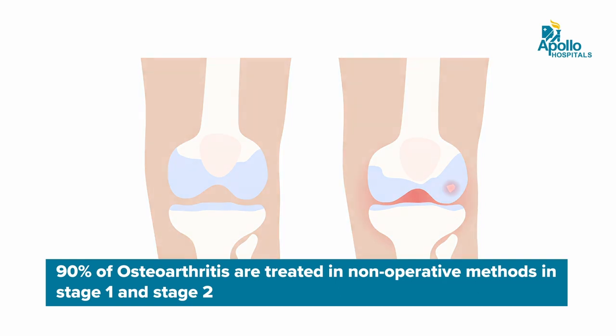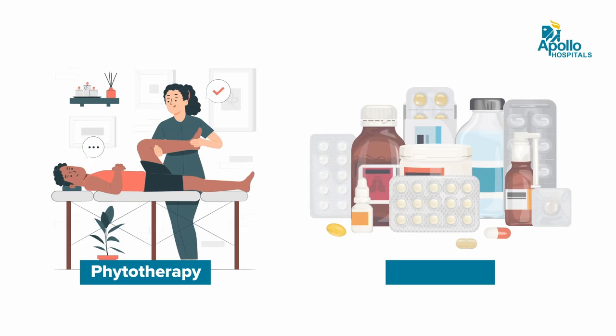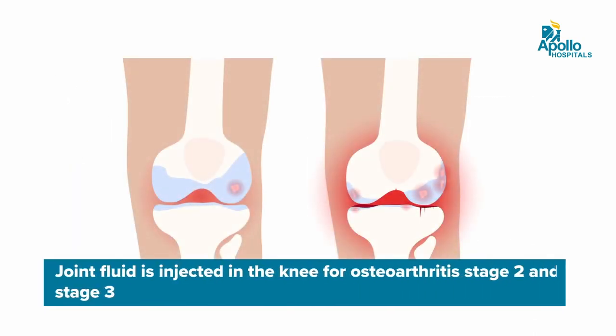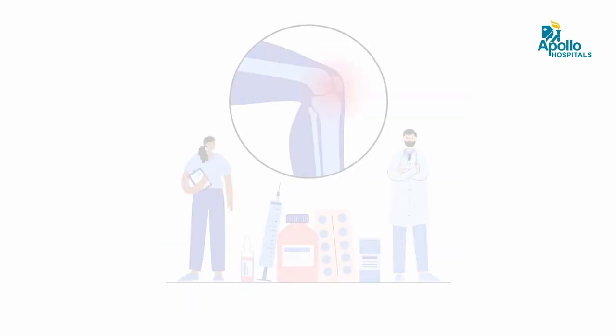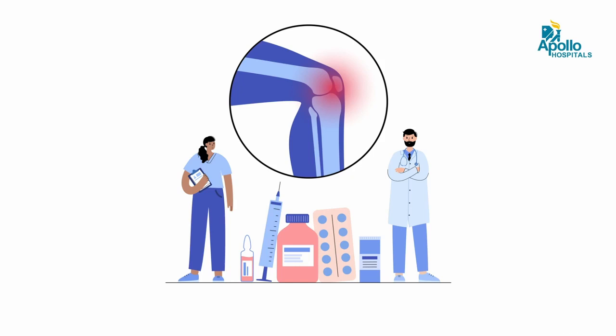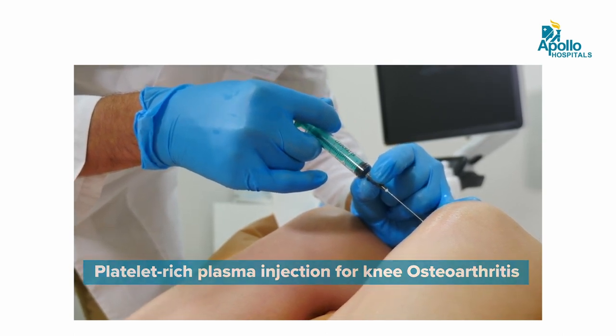How is osteoarthritis treated? Treatment is based on the stage. There are four stages: Stage 1 is mild, Stage 2 is mild to moderate, Stage 3 is moderate to severe, and Stage 4 is severe. In stages 1 and 2, 90% of patients are treated non-operatively with simple modification of activities, physiotherapy, and painkillers like paracetamol. In stages 2 and 3, we sometimes inject joint fluid into the knee, and also treat with PRP — platelet-rich plasma — which may improve cartilage quality and aid repair.